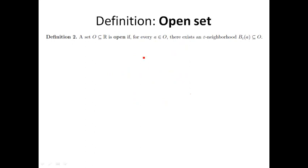With epsilon neighborhood defined, we can now define what it means to be an open set. A set O, subset of the real line, is open if for every a in the set O, there exists some epsilon neighborhood which is a subset of the set O.